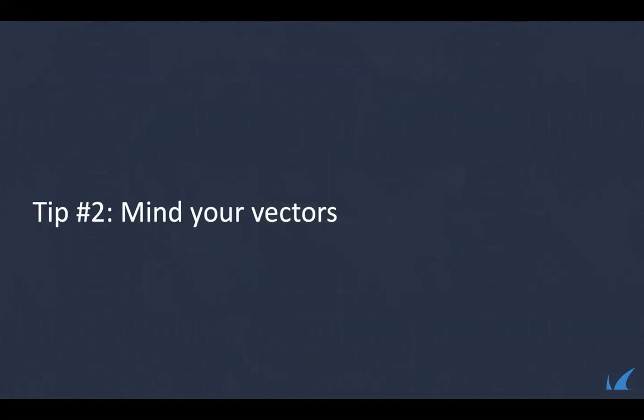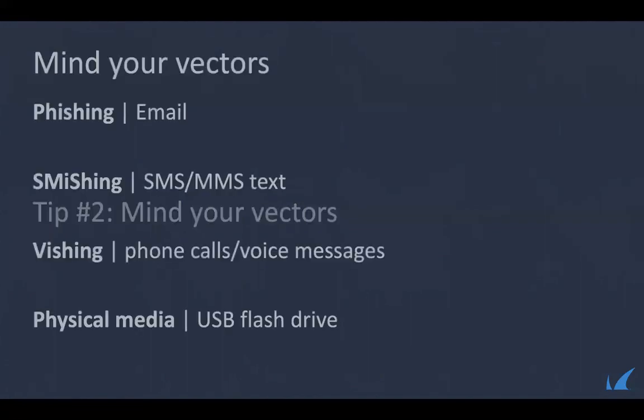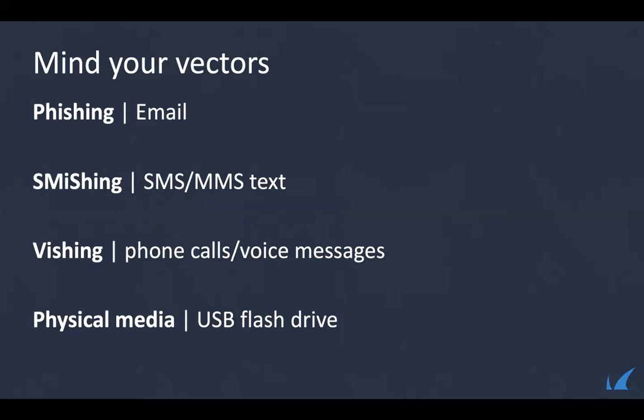Tip number two: mind your vector. Though the majority of spear phishing and social engineering attacks come through email, it's not the only vehicle. Hackers are utilizing different vectors. Smishing — a hybrid of SMS and phishing — is becoming more popular: attacks that come through via text message. These can be super tricky because we aren't able to see a lot of the clues we're trained to look for, like who the sender is or hovering over a link.